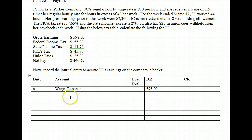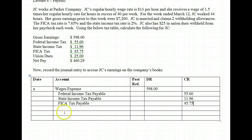On our employee's behalf, we withhold taxes for them, so those are not expenses to us — those are payables. Federal income tax goes in as a payable; it's a pass-through. We hold it out of the expense for the employee and send it to the government. The same thing for state income tax: we're withholding it on their behalf to pay to the state government, and that was $11.96. Then FICA taxes payable goes to the federal government at $45.75. And last, union dues payable — we don't keep the union dues, we pay them to the union.